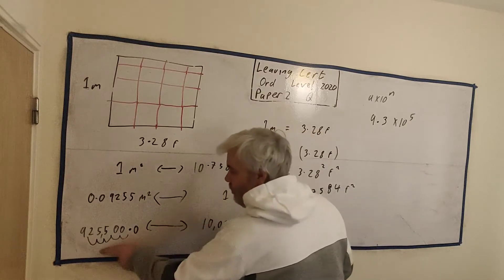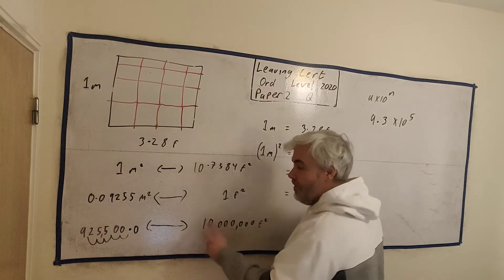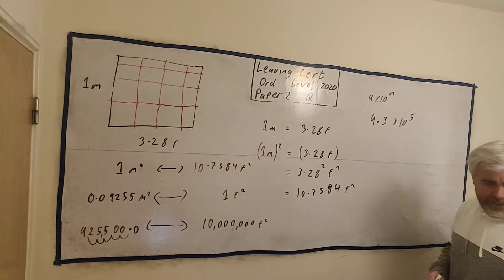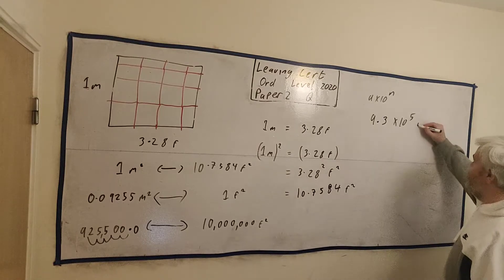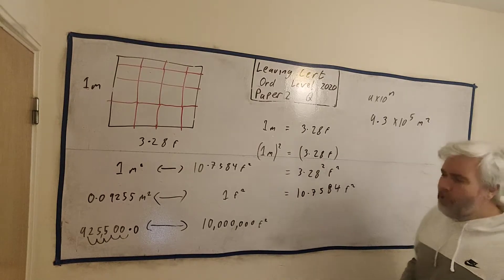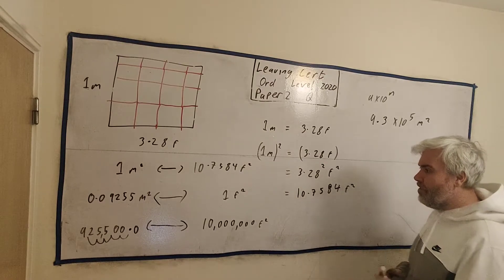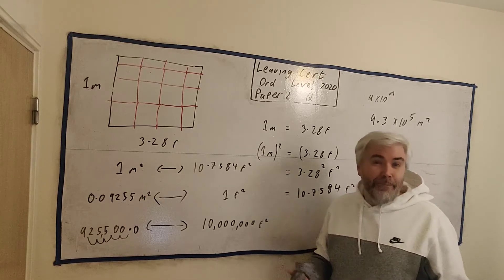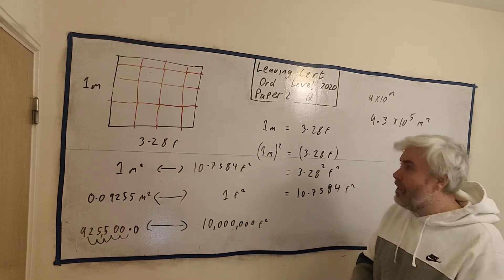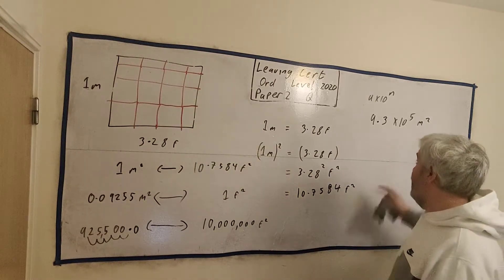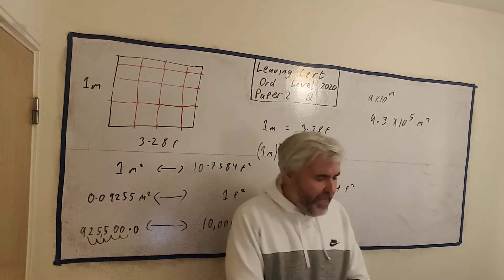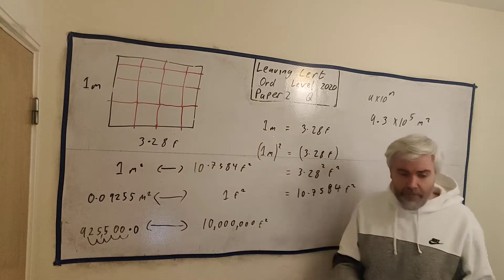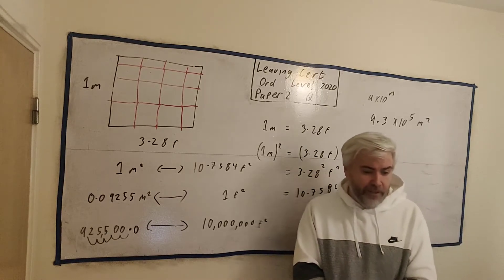This number is the same as this one, rounded off. This is square meters. Always check if your answer makes sense. It was 10 million square feet, and it's 930,000 square meters. That makes rough sense. A meter is much bigger than a foot, so it should be less meters. That's part A, part 1. I hope I explained that okay. If you have any follow-up questions, put them in the comments below. I'll rub this out and move on to part 2.